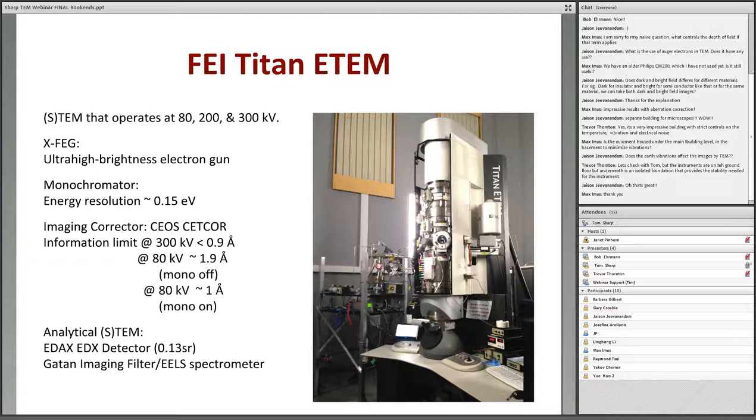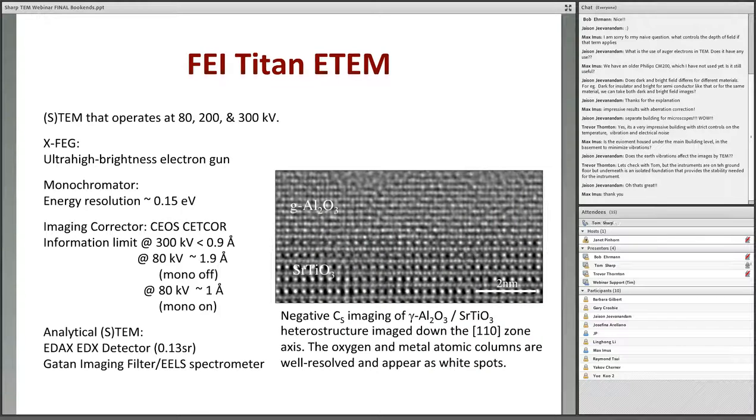I'll tell you a bit about the microscope. This is a 300 kV microscope. We run it at 80, 200, and 300 kV. It has a very bright field emission gun. It has a monochromator that gives us an energy resolution of 150 millielectron volts, about 10 times what the other microscope can do, but it's still very good. It has this image corrector. The information limit, in other words the resolution we can get with it, is down to about 0.9 angstroms at 300 kV. With the monochromator, we do even better. It also has EDX and EELS for analytical work.